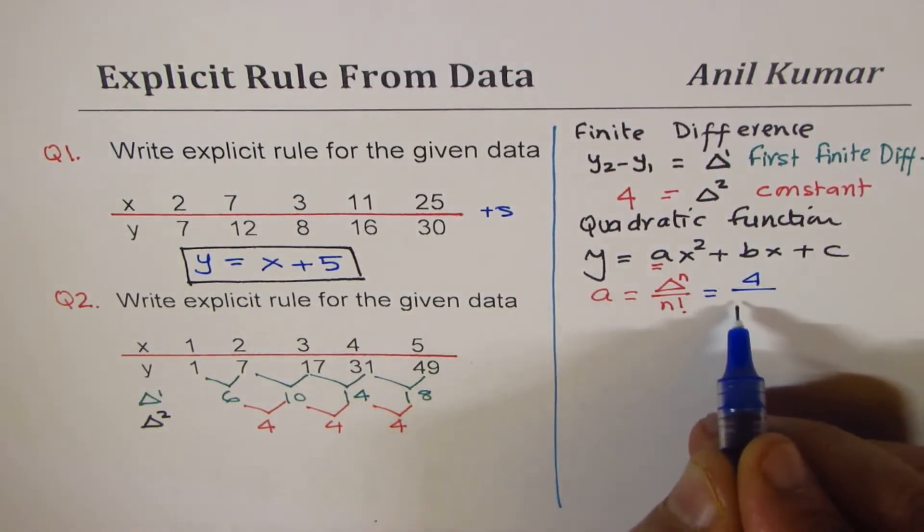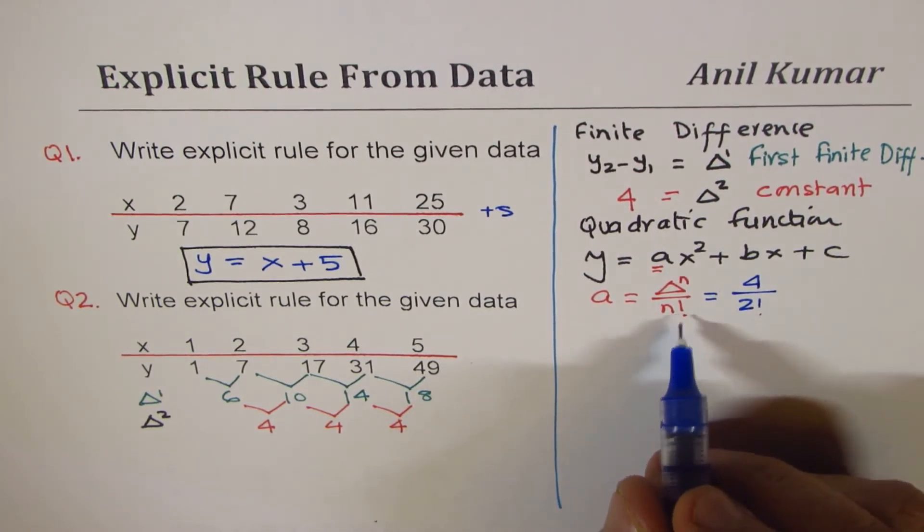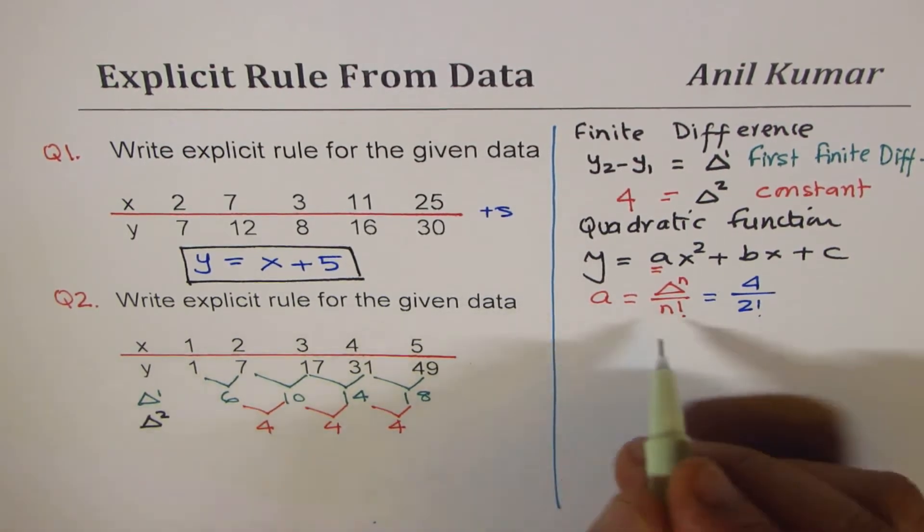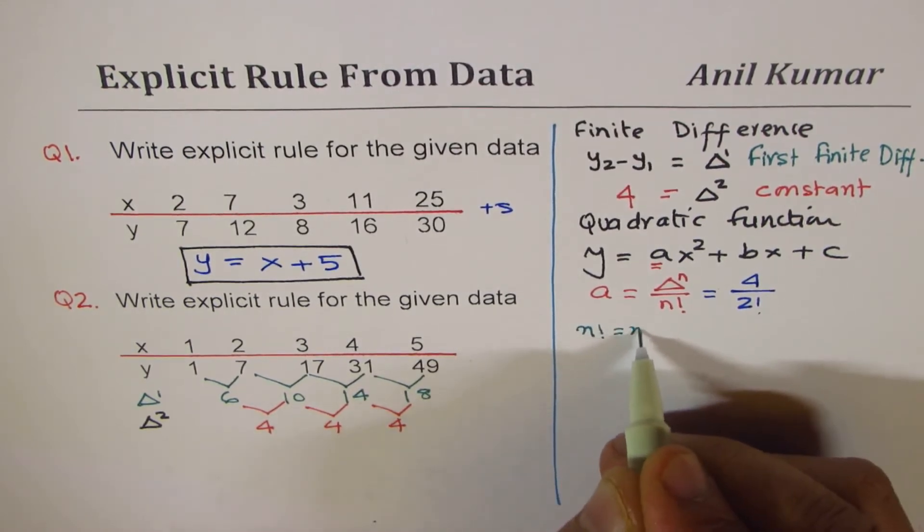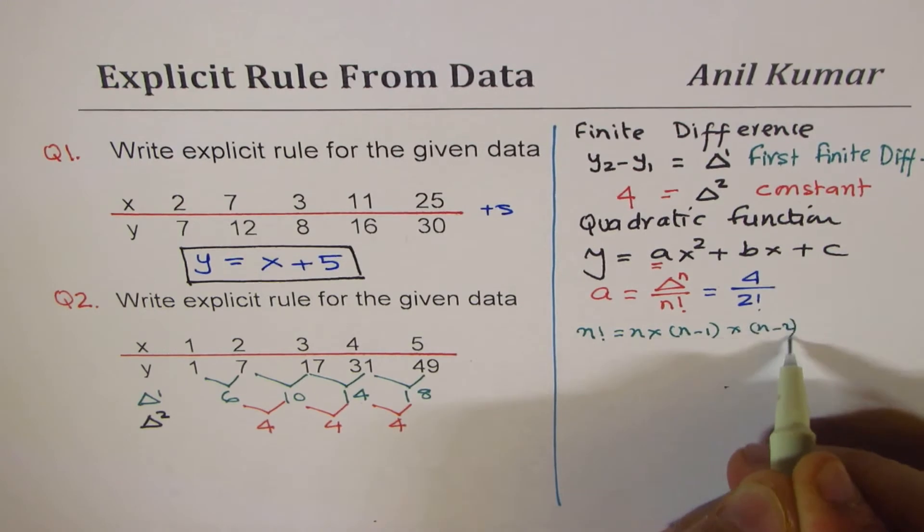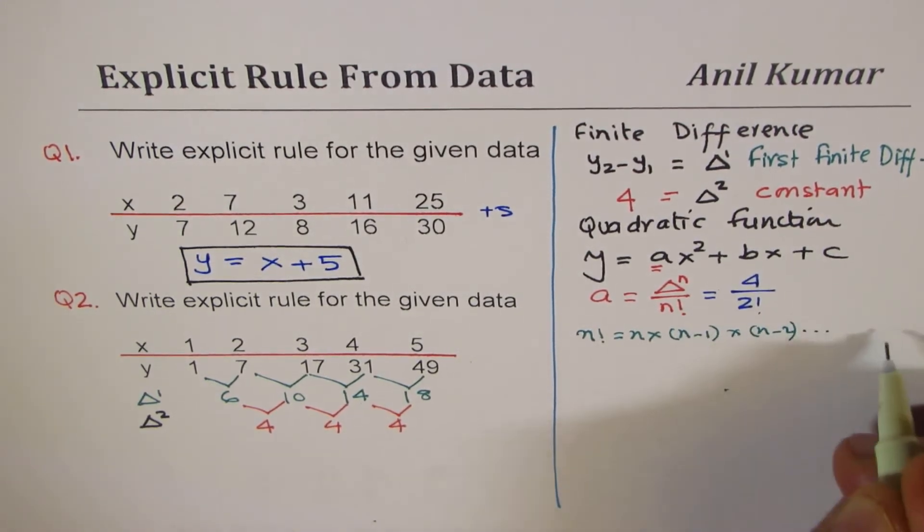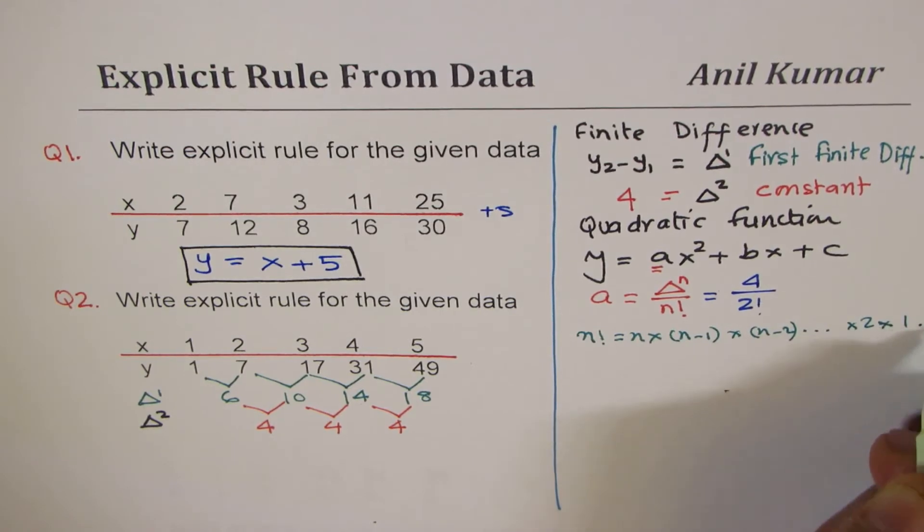Factorial means something like this: n factorial means n times n minus 1 times n minus 2, so keep on decreasing the numbers till you get to times 2 times 1. For example, 5 factorial will be 5 times 4 times 3 times 2 times 1.